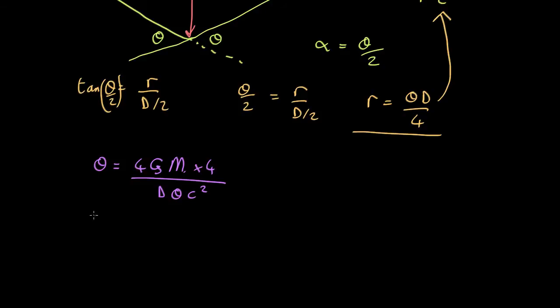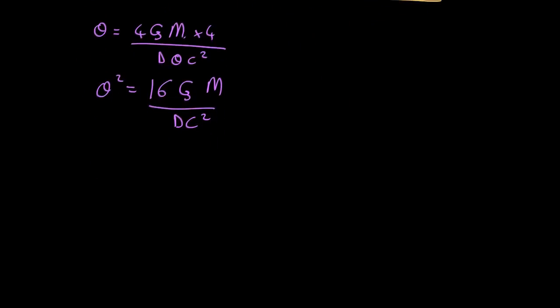I want to take the theta up here. So that gives us theta squared equals 16gm over dc squared. Take the square roots of both sides and substitute it because we know that alpha is half of theta. So we end up with alpha equals the square root of 4gm over dc squared.